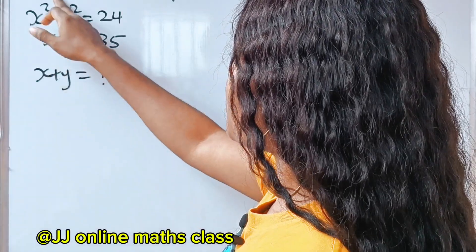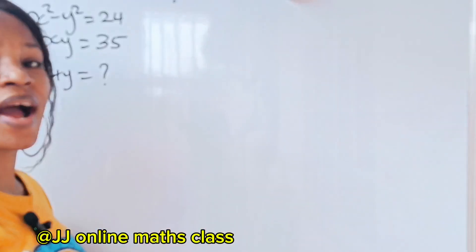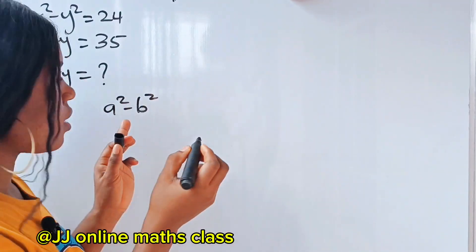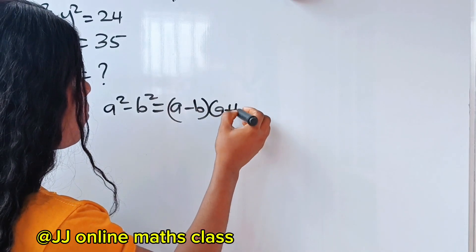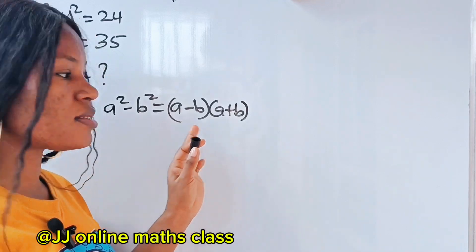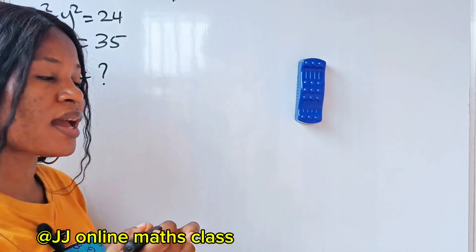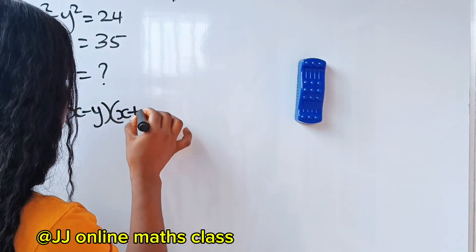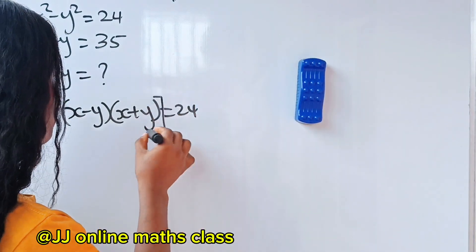First of all, x squared minus y squared is the difference of two squares — the algebraic identity: a squared minus b squared equals a minus b, multiplied by a plus b. So let's use it here: x squared minus y squared can be written as x minus y, multiplied by x plus y, equals 24.